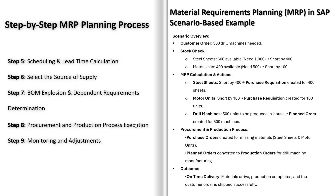The BOM explosion determines the quantities of raw materials or components required to produce an assembly or finished product. Dependent requirements are materials needed for the production of another material — for example, components required to make a finished product — and SAP calculates these based on the BOM structure. Step 8: procurement and production process execution. Once SAP has generated purchase requisitions and planned orders, the procurement team reviews and converts purchase requisitions into purchase orders, which are sent to suppliers. The production team reviews and converts planned orders into production orders to begin manufacturing.